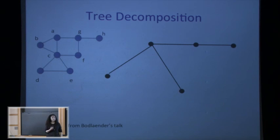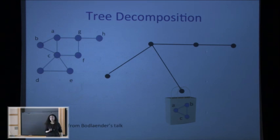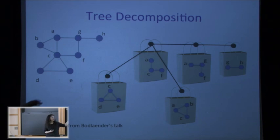To formally define tree-width, we take any graph and simulate it on some tree. We take a tree, and for every vertex of this tree we put a bag on it. Into this bag we're allowed to put any vertices and edges of the graph — the same vertex or edge can appear in several bags.